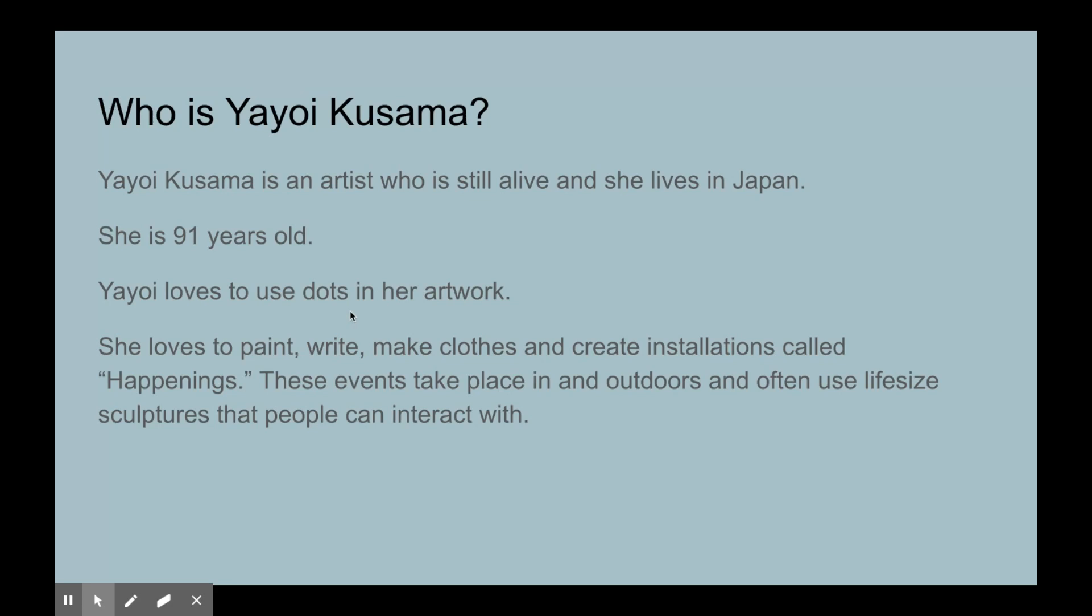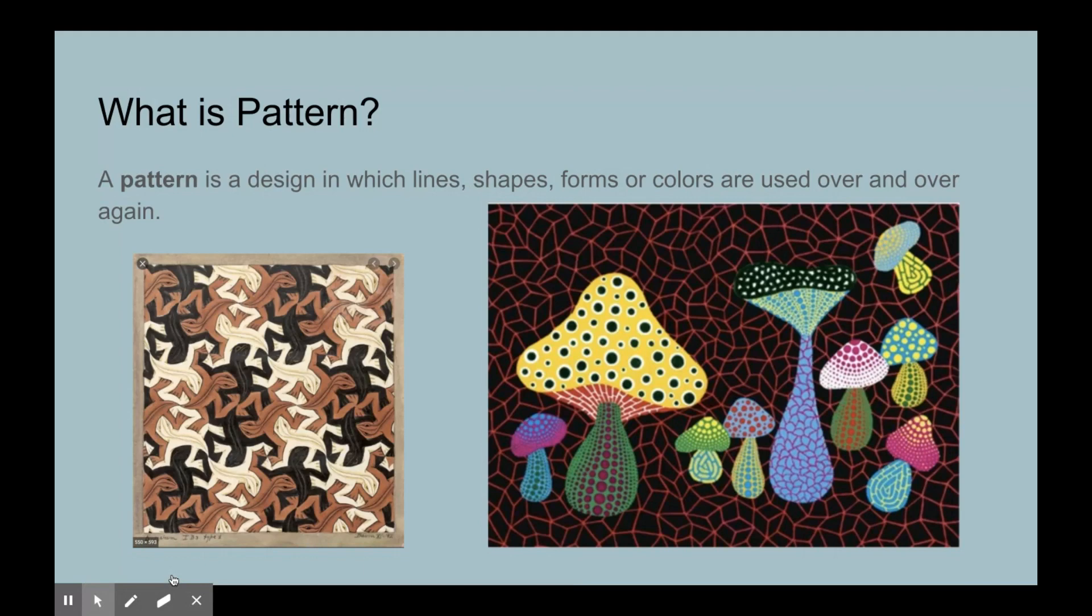She loves to use dots, as I told you before. She loves to paint, write, make clothes, and create installations that she calls happenings. These events take place in and outdoors and often use life-size sculptures that people can interact with. So if you ever have the opportunity to go see Yayoi Kusama in an exhibition or installation, definitely take that opportunity because it is not to be missed.